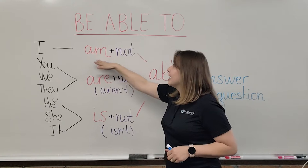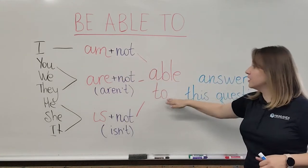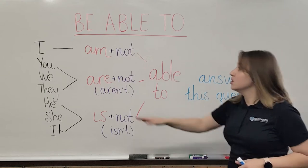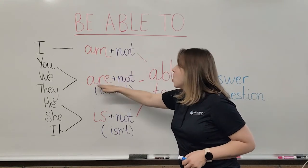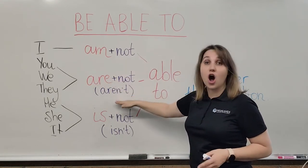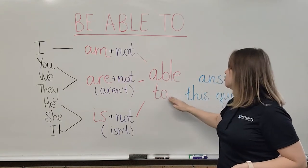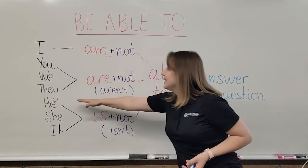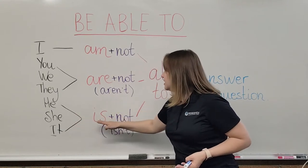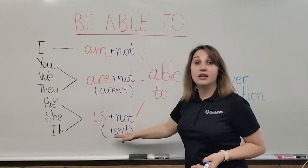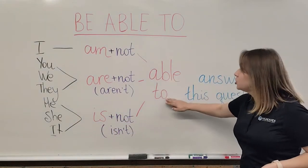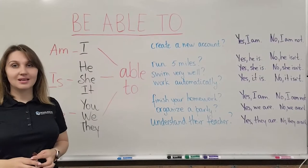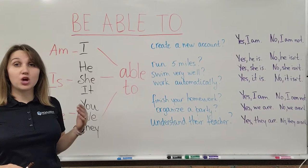Let's look at our sentences. 'I am not able to answer this question.' 'You, we, they are not' or 'aren't able to answer this question.' 'He, she, or it is not' or 'isn't able to answer this question.'